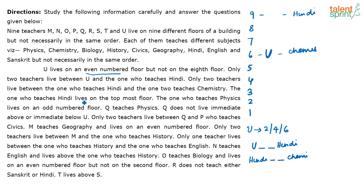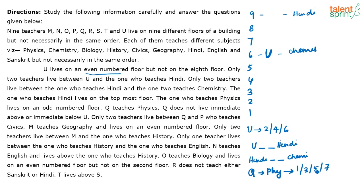The one who teaches physics lives on an odd numbered floor, and Q teaches physics. So Q lives on an odd numbered floor — the possibilities are 1, 3, 5, or 7. But Q does not live immediately above or below U, who is on floor six, so Q cannot be on floor 7 or 5. Therefore Q must be on floor 1 or 3.